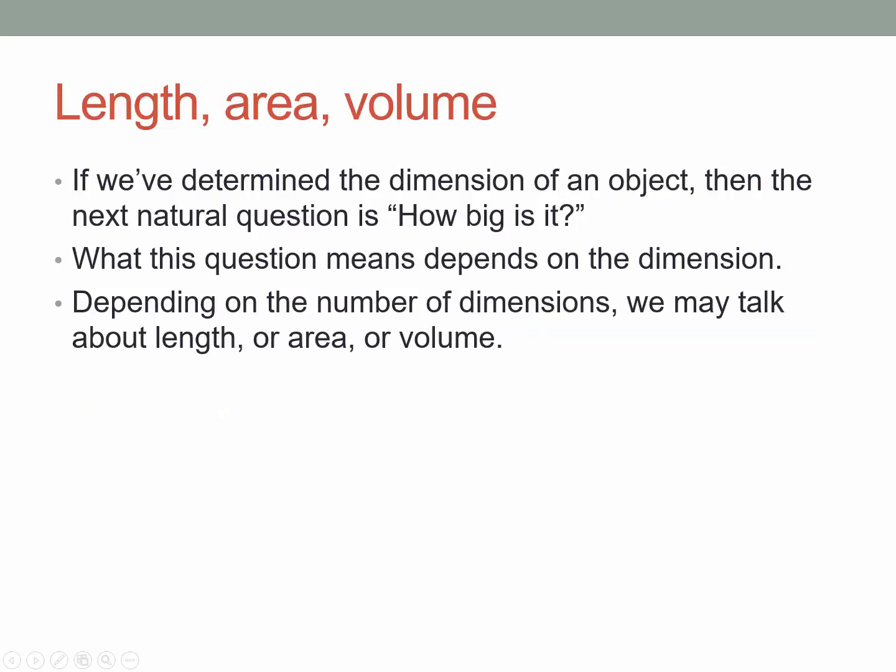So if we determine the dimension of an object, then the next natural question to ask about it very often is, how big is it? Well, this question is ambiguous. What it means depends on the dimension. You can't really begin to ask this question properly until you know what the dimension of the object is. So depending on the number of dimensions, we may talk about length, we may talk about area, or we may talk about volume.